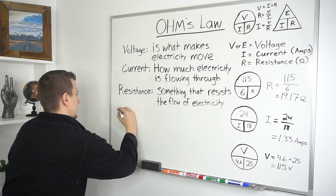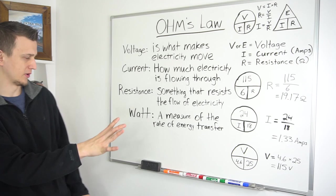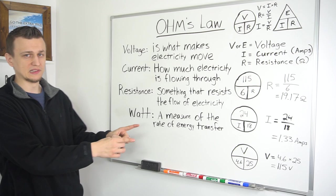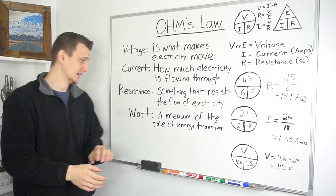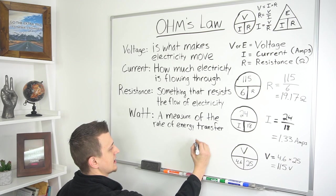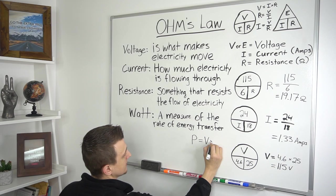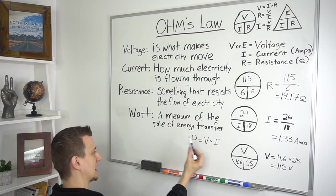So a watt is a measurement of the rate of energy transfer. Now that kind of sounds like a mouthful. So in simple terms, if we go back to our water analogy, a watt would be like the speed of the water going through the pipe, how fast it's going through. So basically a rate of transfer, how fast that electricity is going through. And there is another formula for figuring out the watts, and it's pretty simple. I'm going to go ahead and write that one down as well. So it's P power, which is the same thing as watts, P equals V times I. So voltage times amps will give you your wattage.